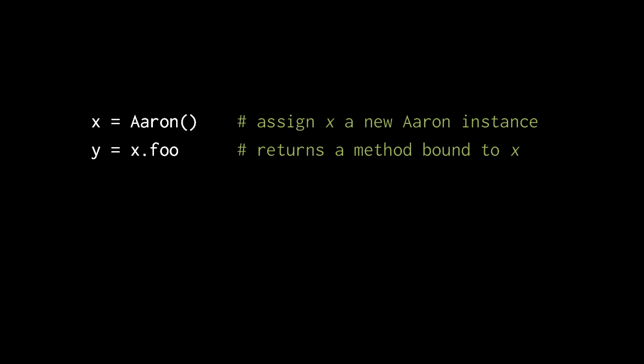and what it returns is not the function found in the class Aaron, but it takes that function and it wraps it in another kind of object called a method, and it returns that method bound to that object in x.